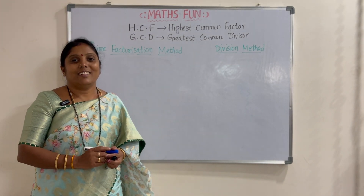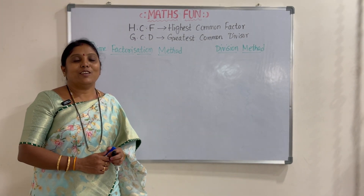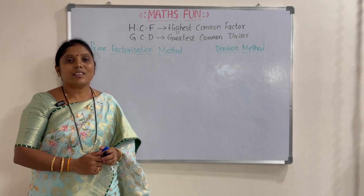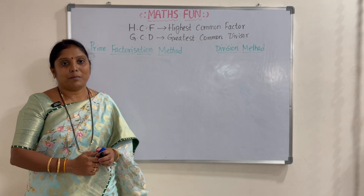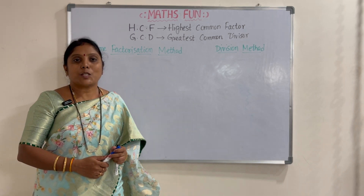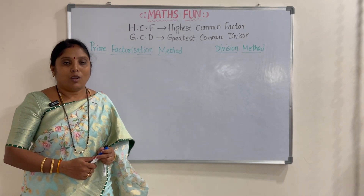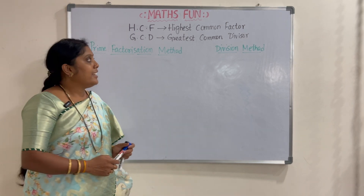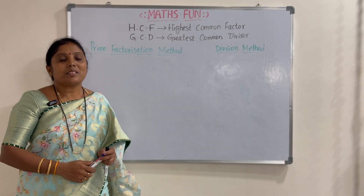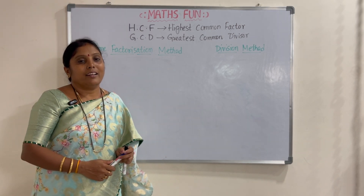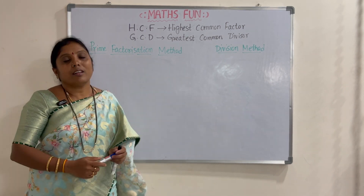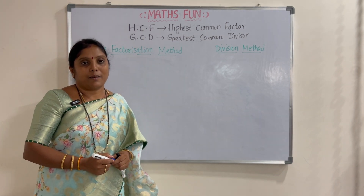Hello everyone. In this video let us learn how to find out the HCF of two numbers. The full form of HCF is Highest Common Factor, or it is also called as GCD — Greatest Common Divisor.